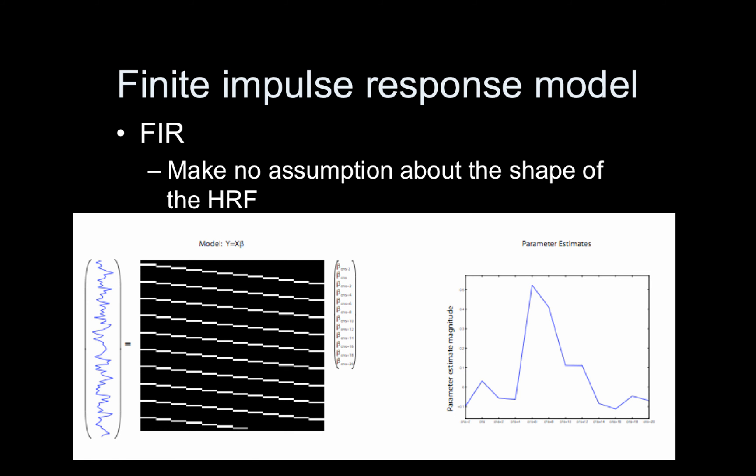Instead, we're going to talk about the finite impulse response model, or FIR. There are a couple of different highly related ways of doing this, but I'm going to present the simplest model, which I call FIR. There's another variation called FBR in the Ashby book — a pretty good book with a lot of MATLAB code by Greg Ashby. I'm not going to talk about the FBR model, but I will talk about the FIR model.